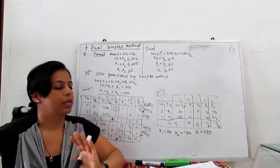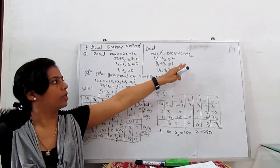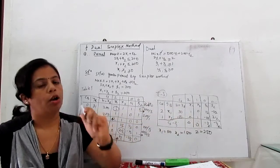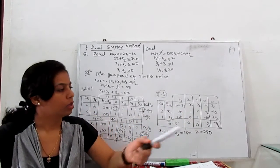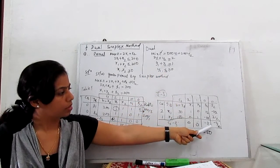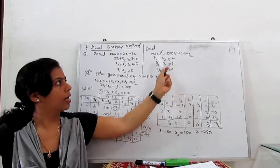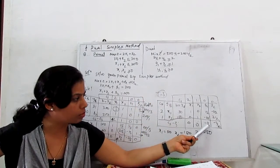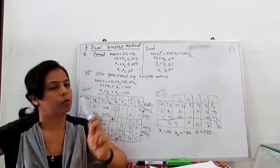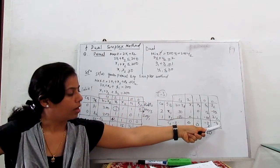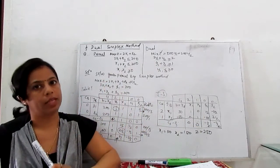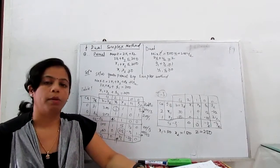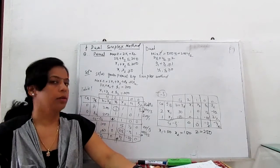Now remember one important thing. The values of the dual variables y1 and y2 come directly from the slack variable values in the primal solution. From the primal tables, the slack variable values are −1/2 and −1/2, meaning y1 = 1/2 and y2 = 1/2. If we solve the dual with simplex, we will also get y1 = 1/2 and y2 = 1/2. Sometimes if a problem has an infeasible solution, we solve with the dual simplex method.